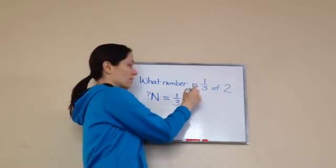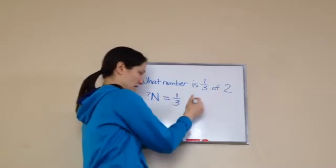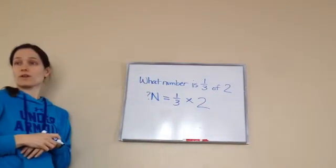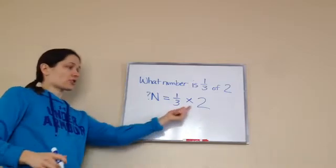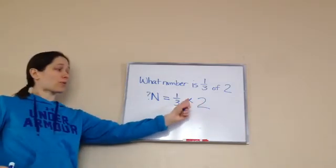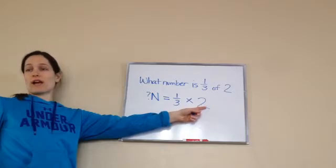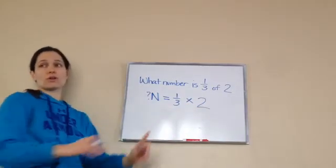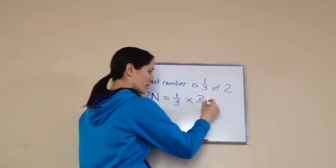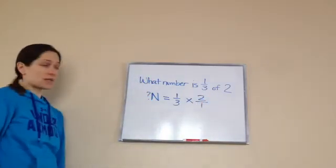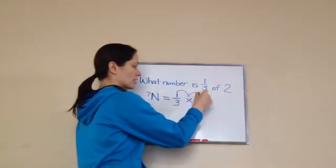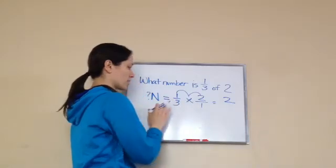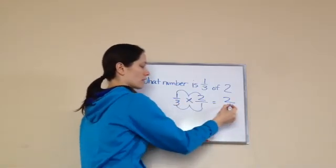2. But this is a fraction. This is a whole number. How do I make, when I'm working with multiplication, how do I make a whole number into a fraction? That would be 2 over 1. Very good. Now let's just work the problem. 1 times 2 is 2. I'm just going to move it over here. And 3 times 1 is 3.